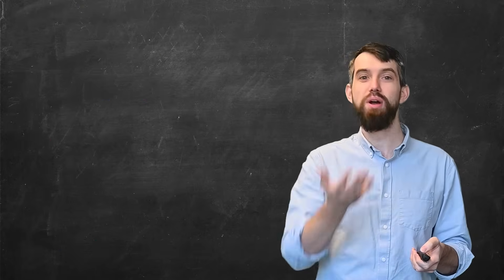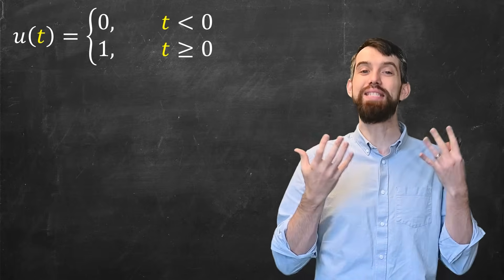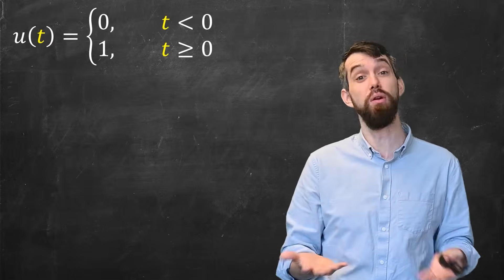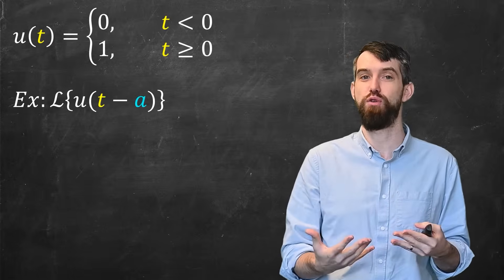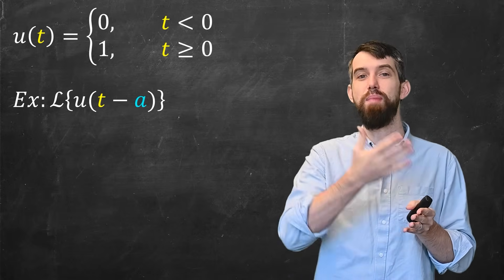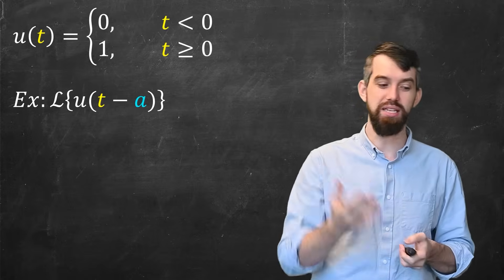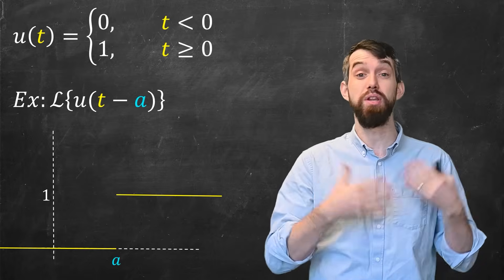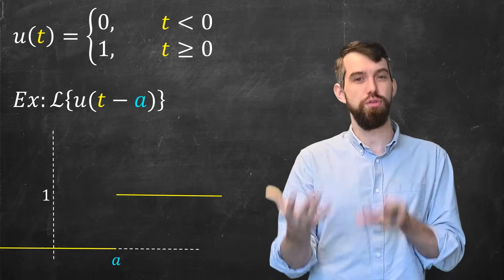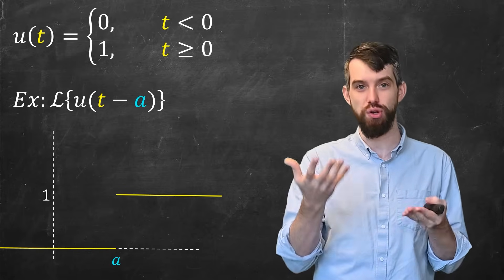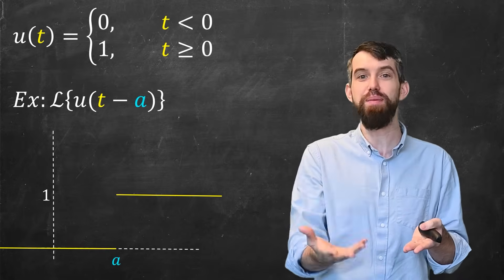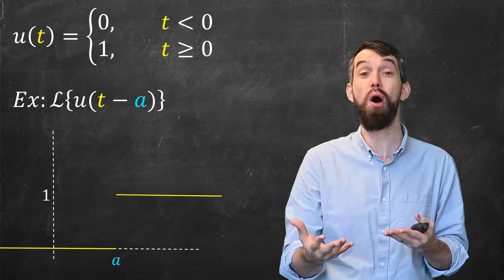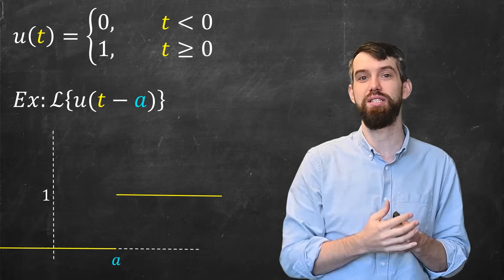Before we get to our second example, I want to introduce a new function — I'm going to call this a step function, or sometimes called the Heaviside function. What this function does is it's 0 when t is less than 0, and it's 1 when t is bigger than 0. The example I want to compute is the Laplace transform of the step function u(t−a). What u(t−a) looks like is: when t is less than a it's 0, and when t is greater than a it's of height 1. This is a very useful function because when you multiply by u(t−a), where a is the spot where you want a discontinuity, it introduces that discontinuity — a wonderful way to model functions that have step discontinuities.